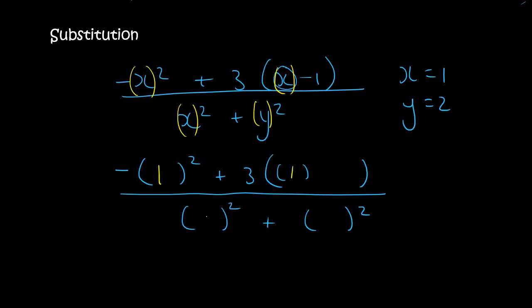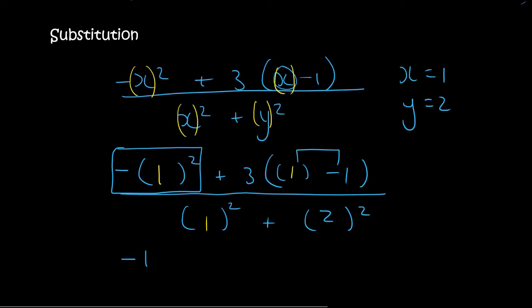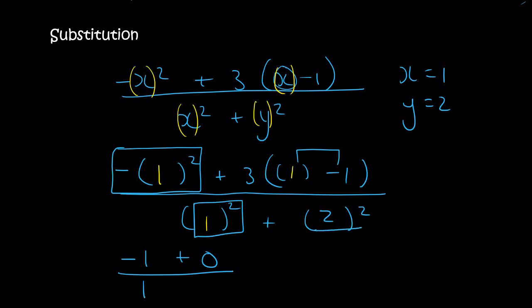Now x is 1, so you just go fill that in, and y is 2, so you just fill that in. Now use a calculator. This part inside the bracket is 1 minus 1, which is 0, so that's just going to be 3 times 0, which is 0. This part here is just 1 times 1, which is 1. This part is 2 to the power of 2, which is 4. So we end up with minus 1 at the top and 5 at the bottom, and that's the answer.